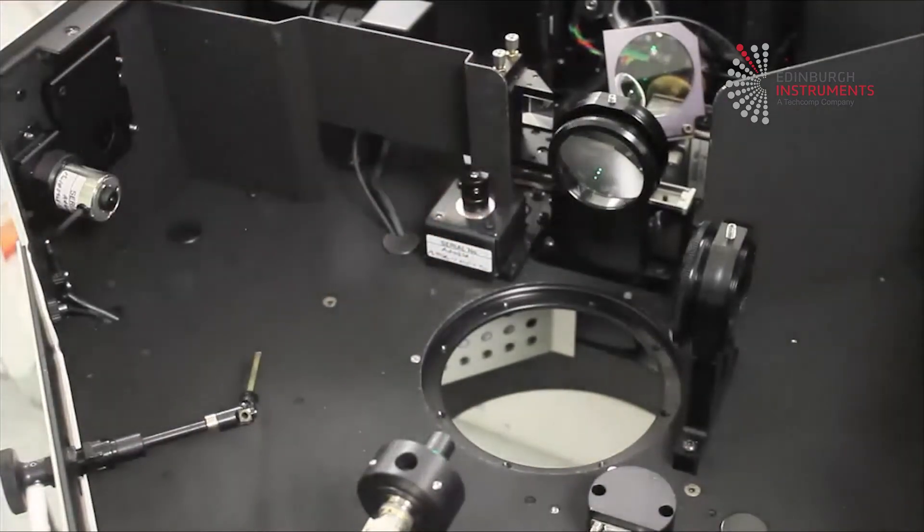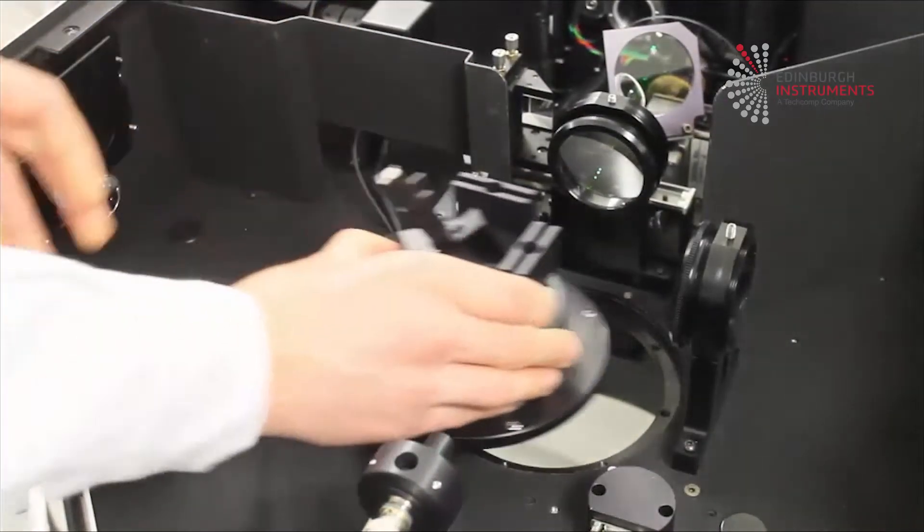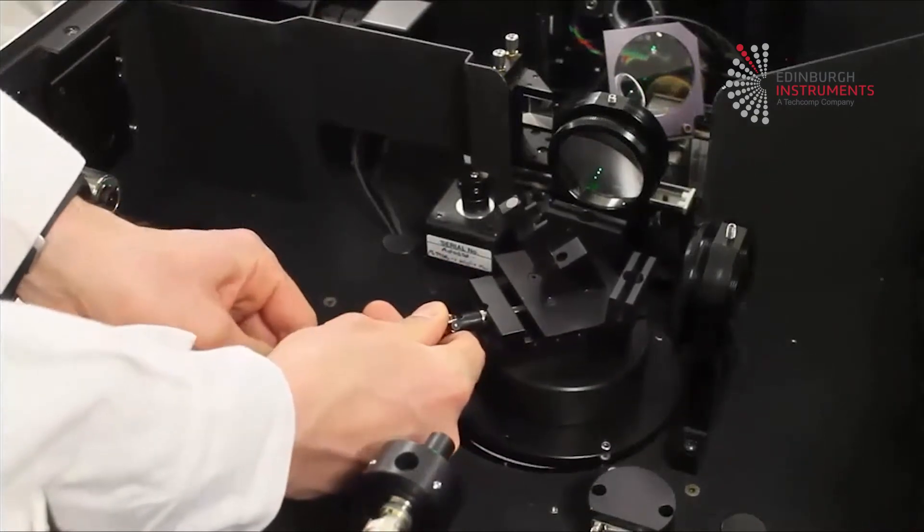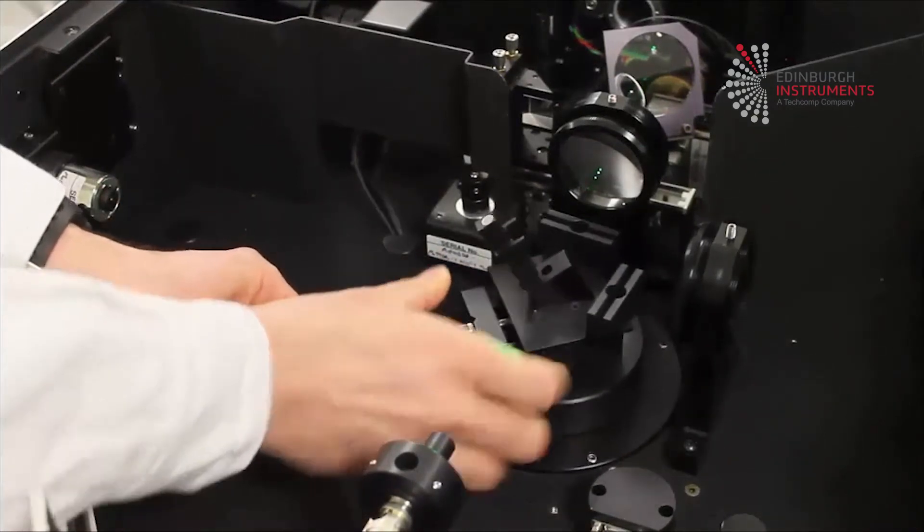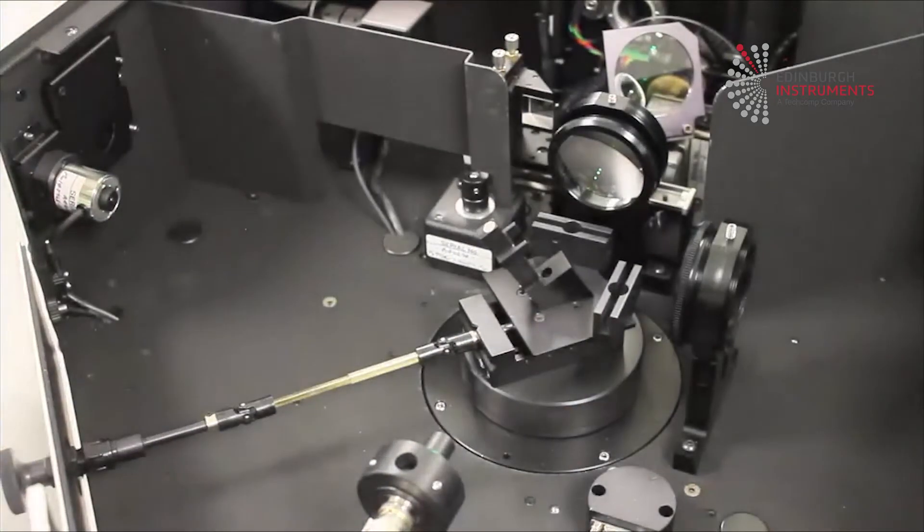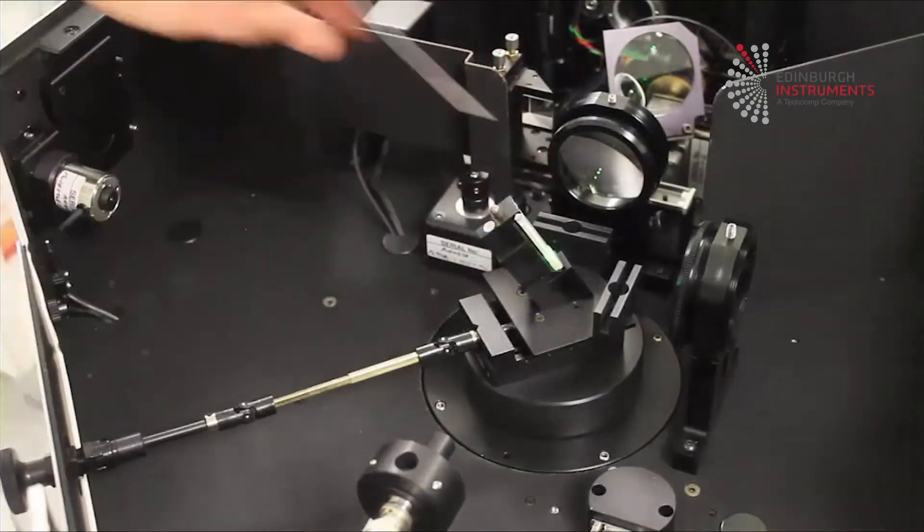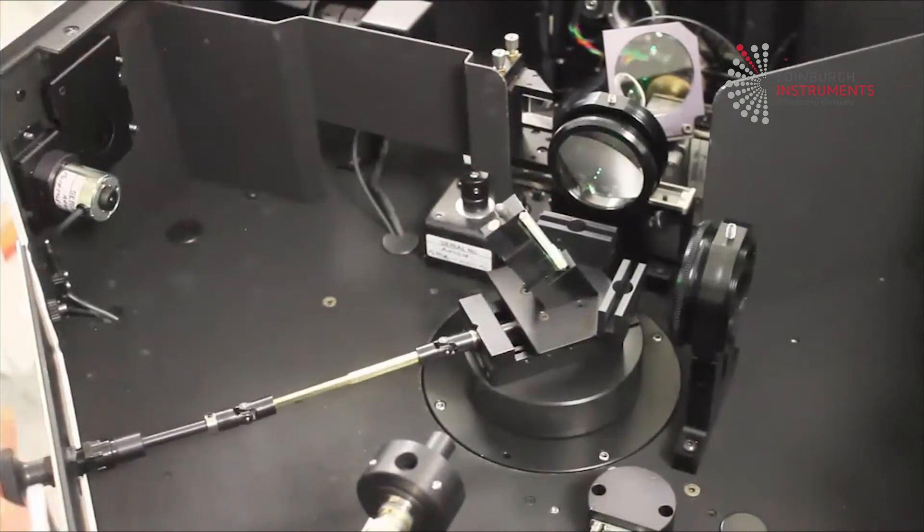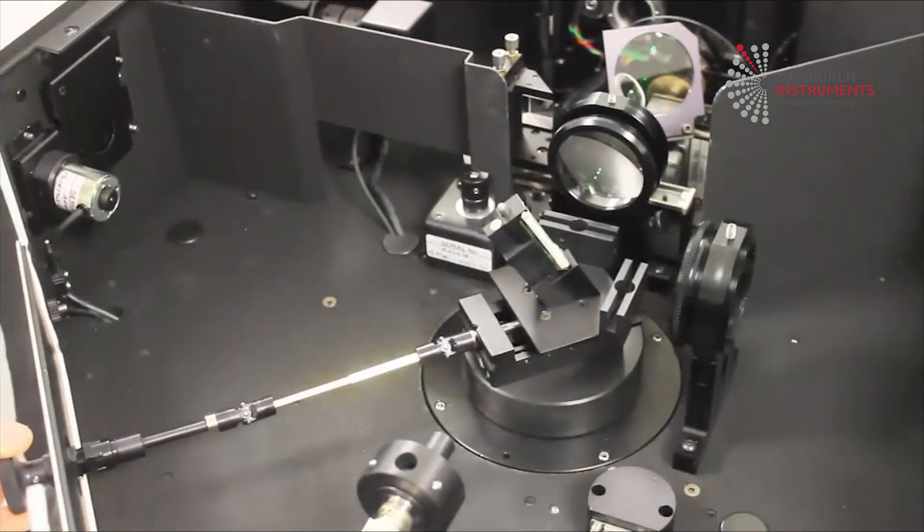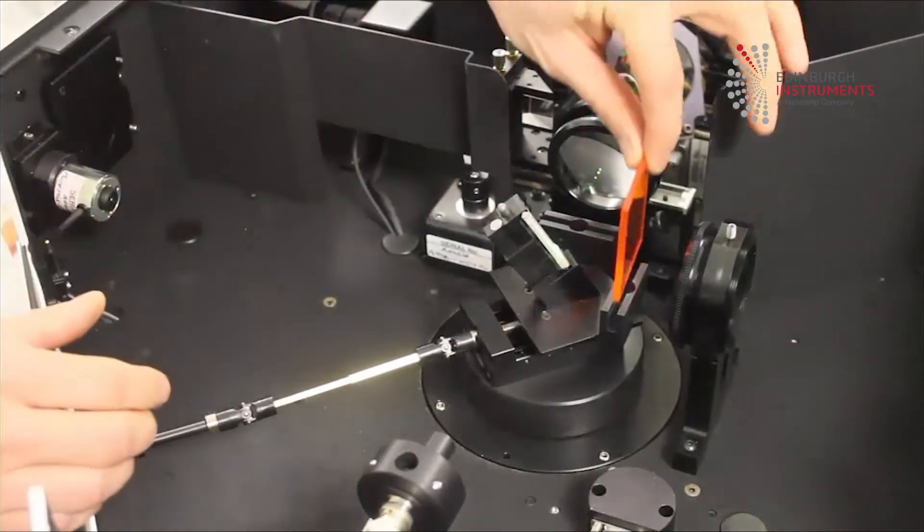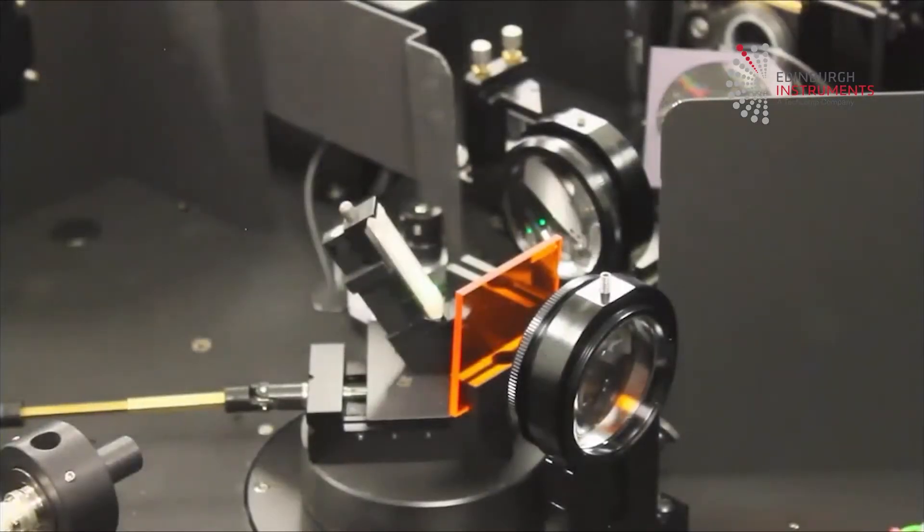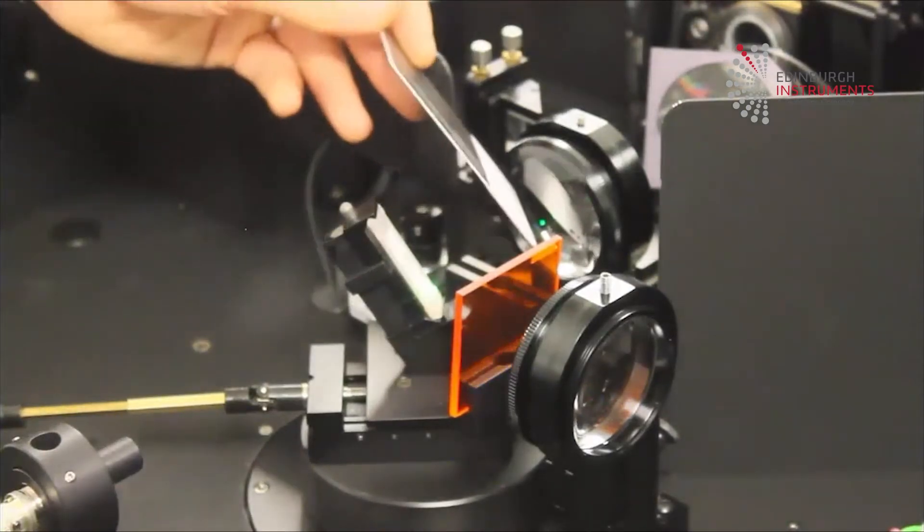Start by placing the front face sample holder or SC-10 into your system. For the FLS and LifeSpec 2, the positioning rod parts need to be fitted carefully. Note the sample holder is reclined to prevent a direct specular reflection of the excitation beam into the emission monochromator.